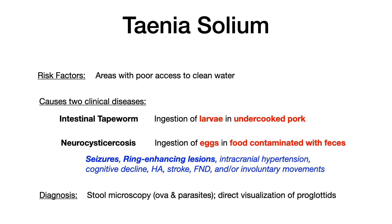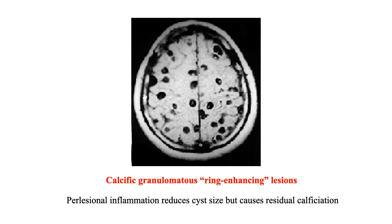Diagnosis is made with stool microscopy — an O&P where you directly visualize the proglottids. Now if they're testing you on Taenia solium, I would venture to bet it will be neurocysticercosis, because the intestinal tapeworm just causes mild GI symptoms and doesn't make for a compelling exam question. They're going to show you calcific granulomatous ring-enhancing lesions on imaging. And if you've been studying, you know other disease processes also cause ring-enhancing lesions.